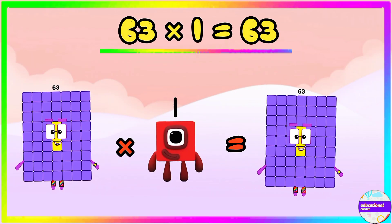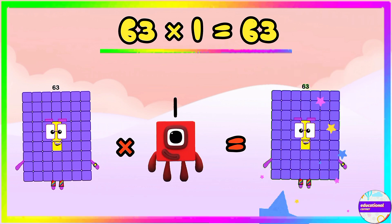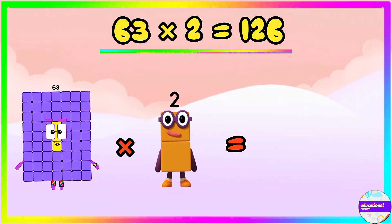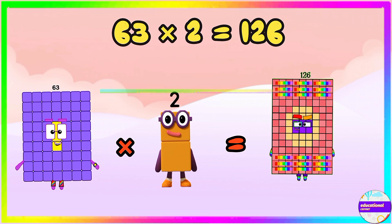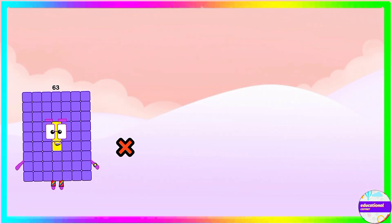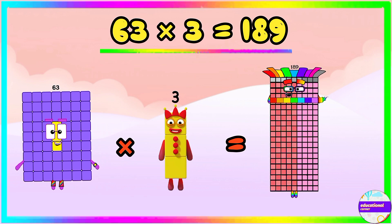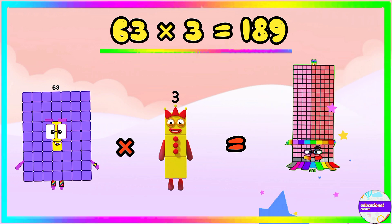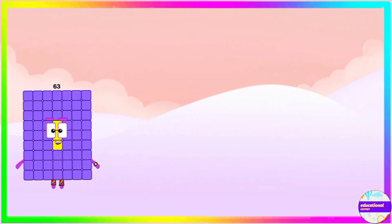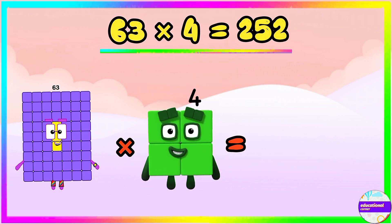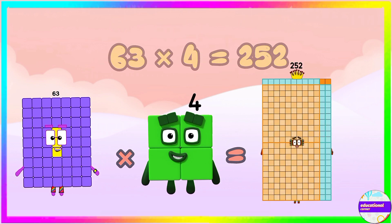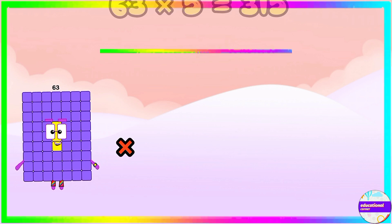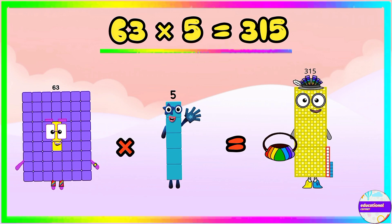63 multiplied by 1 equals 63. 63 multiplied by 2 equals 126. 63 multiplied by 3 equals 189. 63 multiplied by 4 equals 252. 63 multiplied by 5 equals 315.